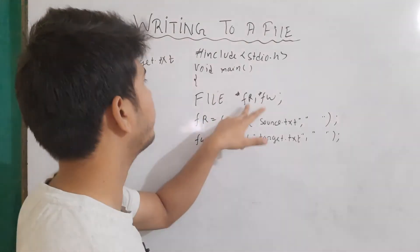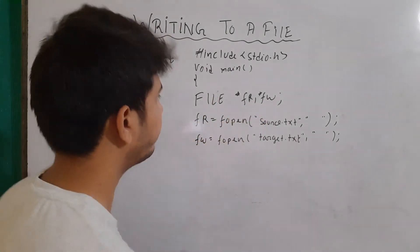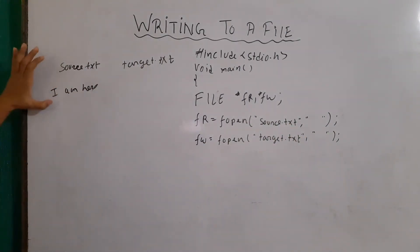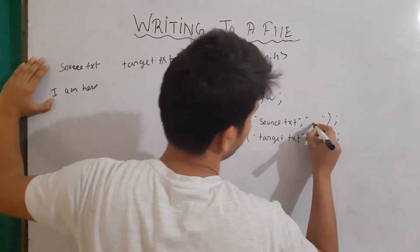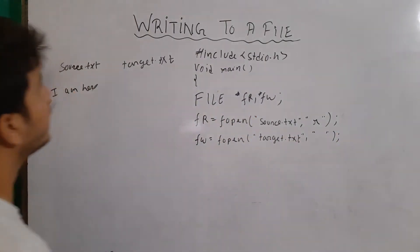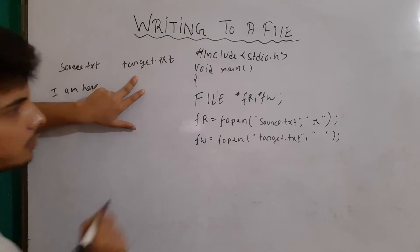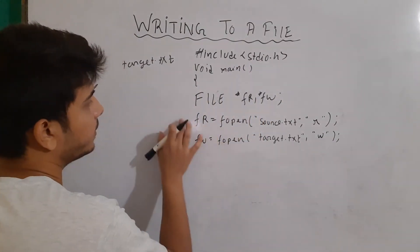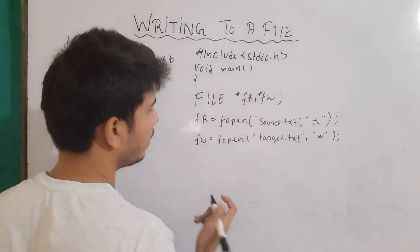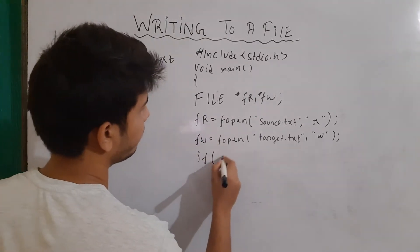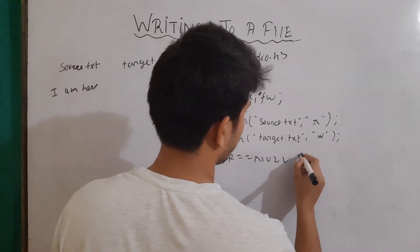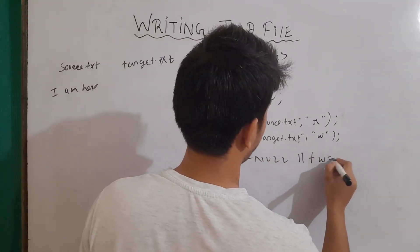First of all, I will make two file pointer variables — fr and fw — to open the respective files. We have to read content from source.txt, so I will open this file with the mode R. And I have to write content to target.txt, so I will open this file with the W mode. Now I will check if either of these are returning null.